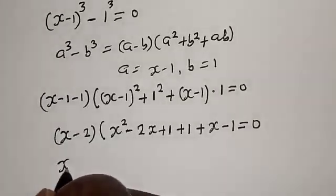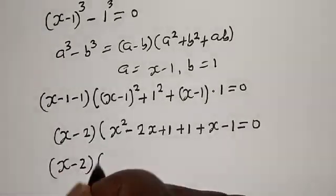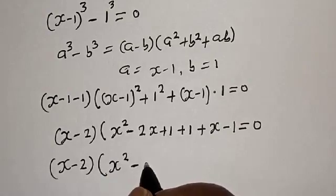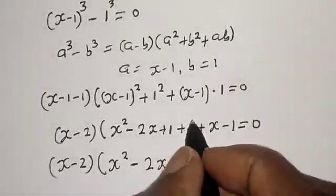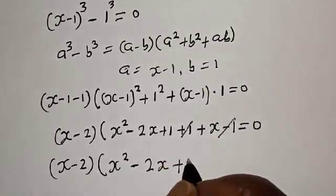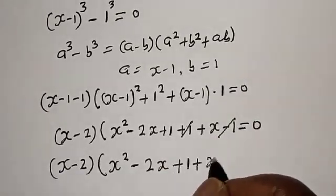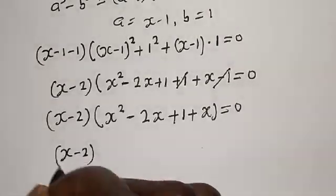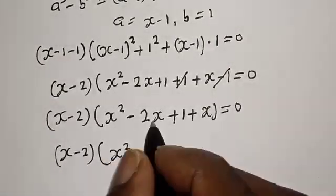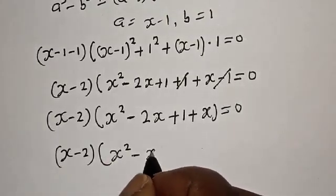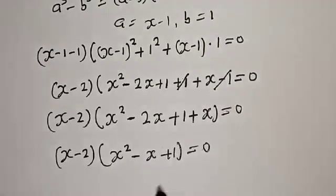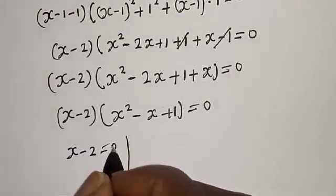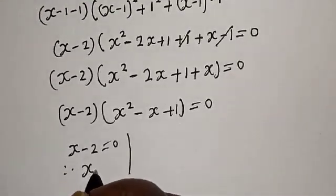So this is s minus 2, bracket s squared minus 2s — the plus 1 and minus 1 cancel — plus s equals 0. So we have s minus 2, bracket s squared minus 2s plus s plus 1, equals 0. There are two cases here. The first case is s minus 2 equals 0, therefore s is equal to 2.